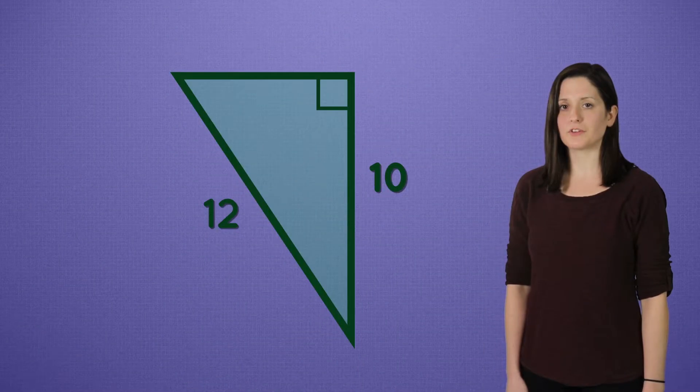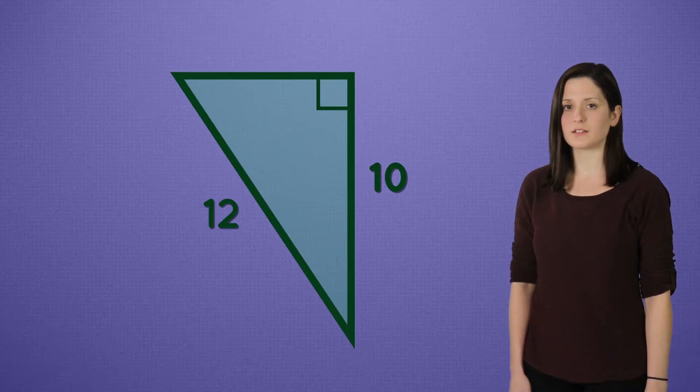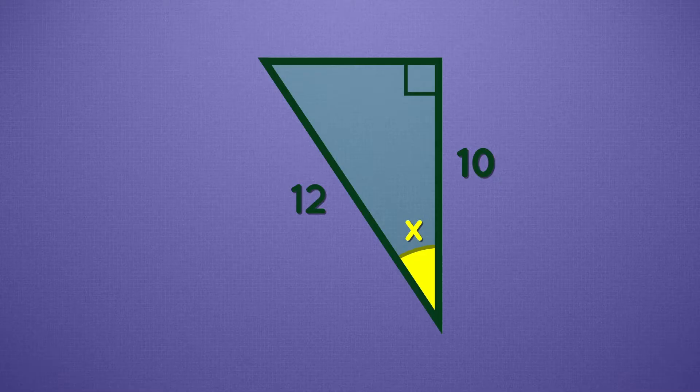Let's try another. Here we have a right triangle, and we know two of the sides. Let's solve for the measure of angle x. First, find what we know. This is the hypotenuse, and this side, next to the angle, is the adjacent.